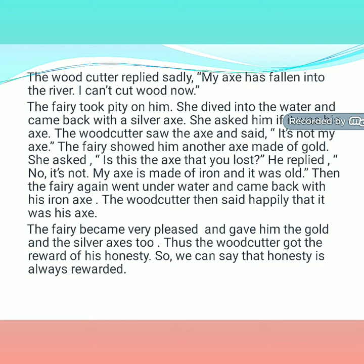She asked him if it was his axe. The woodcutter saw the axe and said it was not his axe. The fairy showed him another axe made of gold and asked if that was the axe he lost. He replied no, his axe was made of iron and was old. Then the fairy again went underwater and came back with his iron axe. The woodcutter said happily that it was his axe. The fairy was very pleased and gave him the gold and silver axes too. Thus the woodcutter got the reward for his honesty.